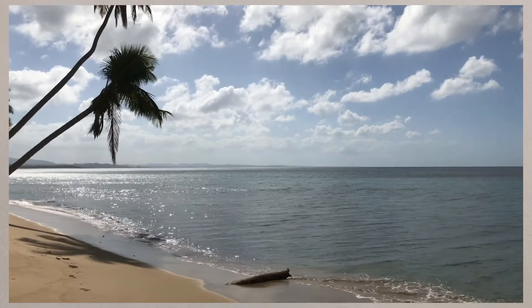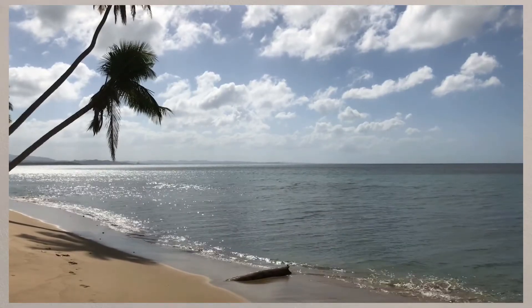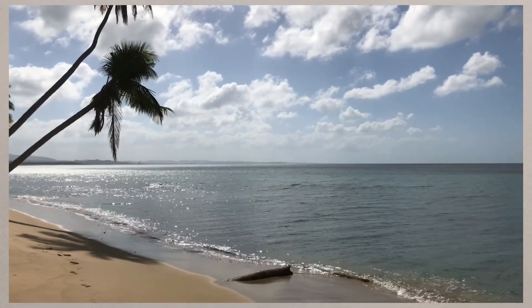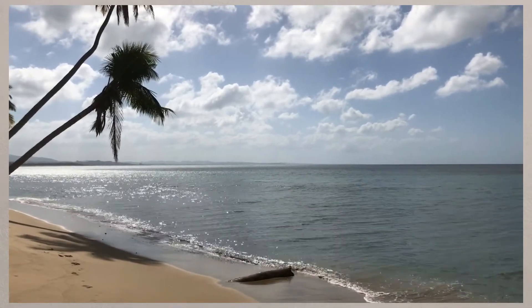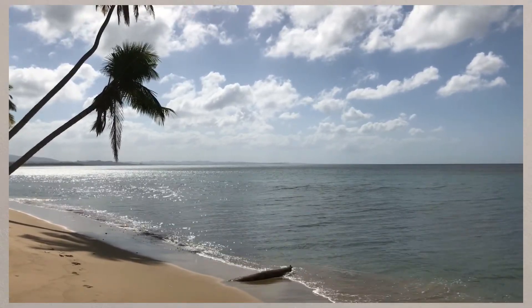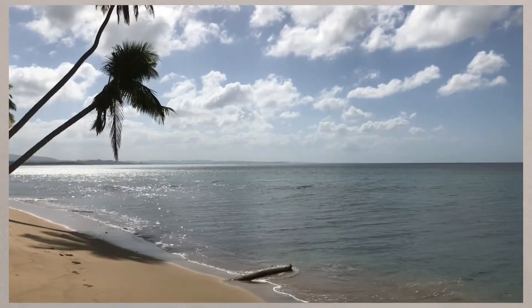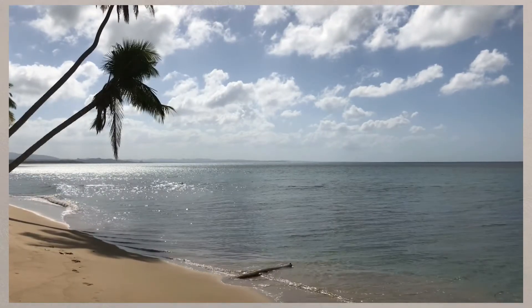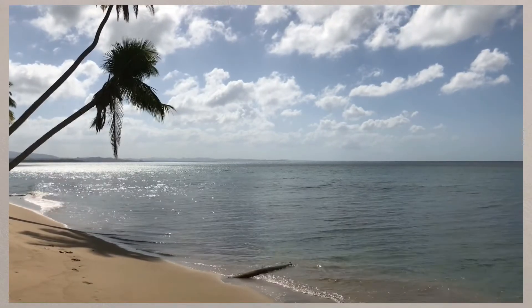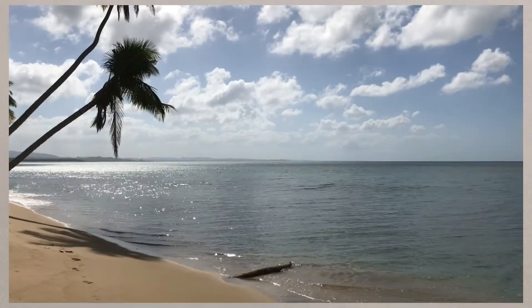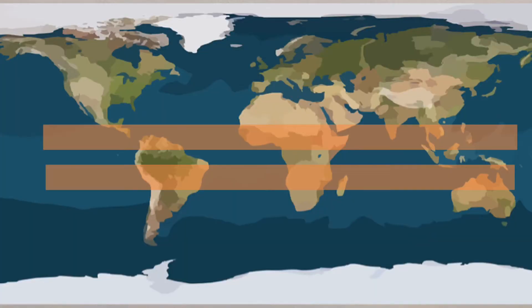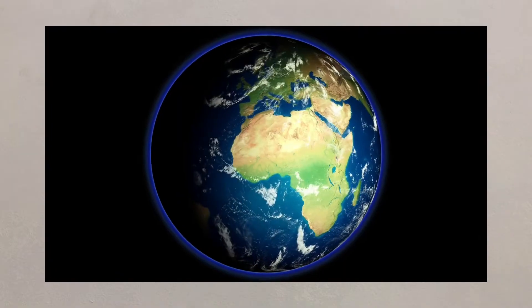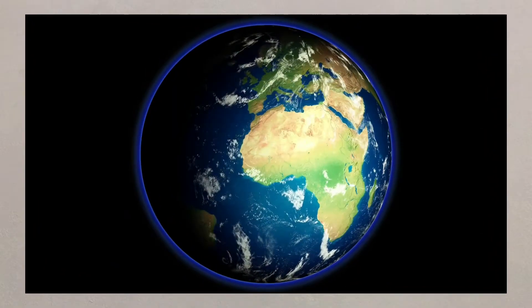Tropical storms form over warm ocean water, usually at the end of summer and start of autumn, when the water is at its warmest and where the heat from the sun makes the air unstable, causing it to rise. They usually form between 5 and 15 degrees north and south of the equator, where the Earth's Coriolis effect will generate the spin in the storm.